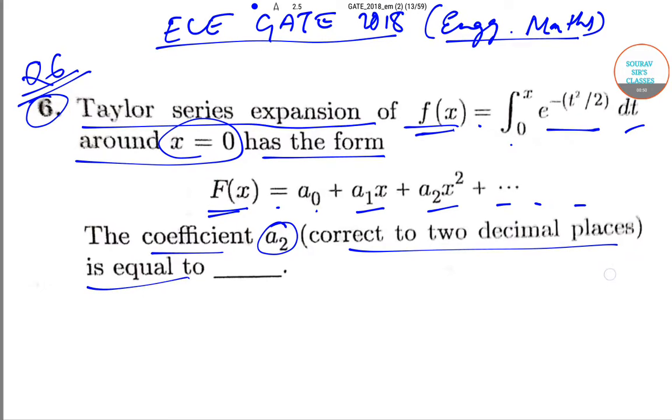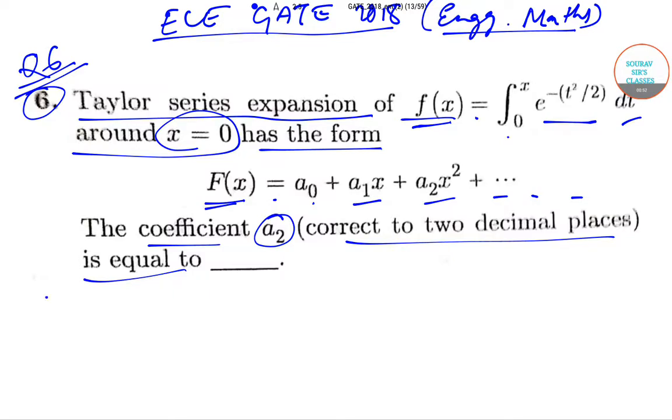We are given f(x) = ∫₀ˣ e^(-t²/2) dt. If we differentiate it, we get f'(x) = e^(-x²/2).